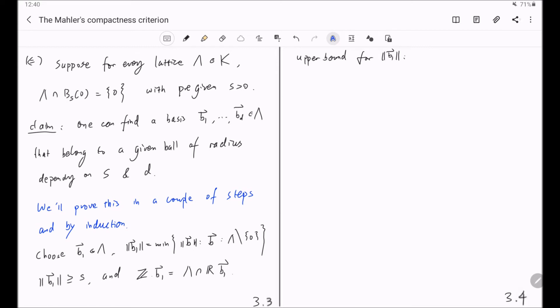And now we claim that the norm of b_1 also has an upper bound that only depends on d. This can be shown by noticing the following fact.